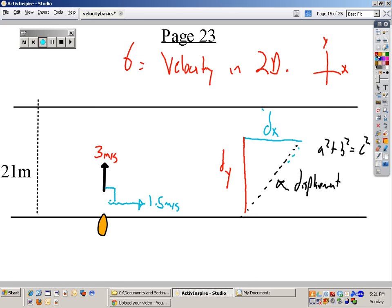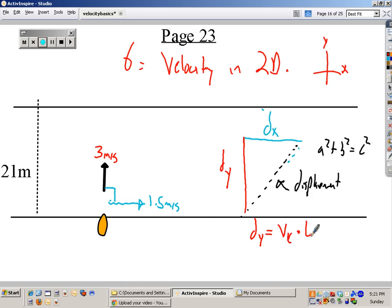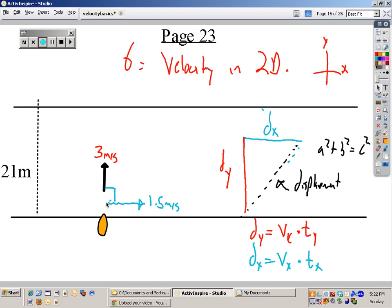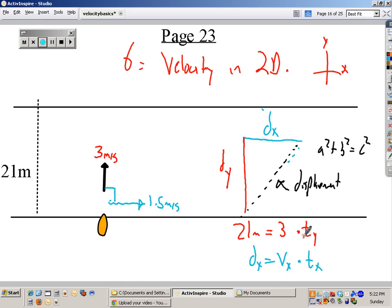So let's solve for these. Here's our goal. To solve for dy, I'm going to use my velocity in the y, the up and down velocity, times time in the y direction. To solve for the x motion, I need to use my velocity in the x times my time in the x. So the first one should be pretty easy. I know what these two are. I know that the distance is 21 meters, and the velocity is 3 meters per second. So to solve for time, divide by 3. Time in the y equals 7 seconds.